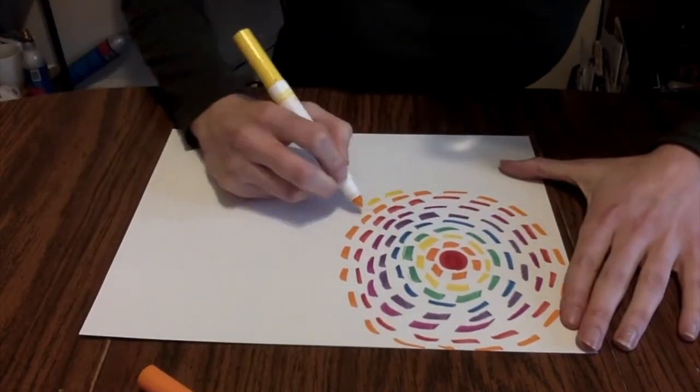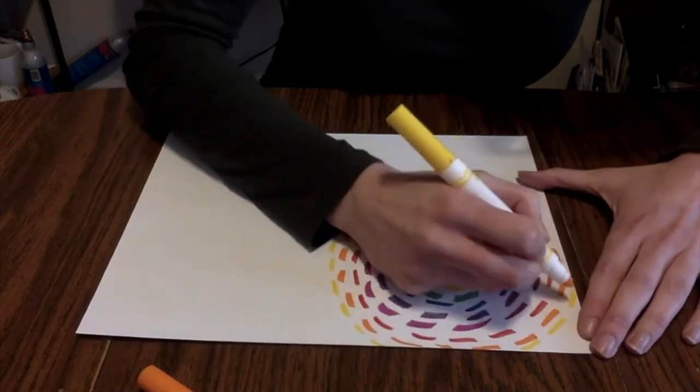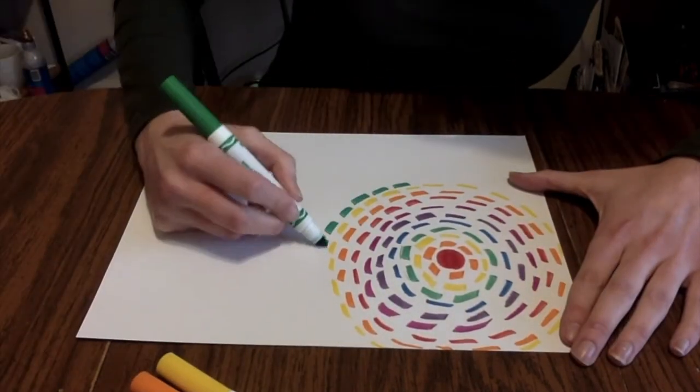As you near the edges of the paper draw your lines and imagine your concentric circle growing off the paper.